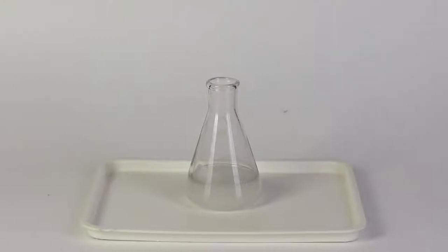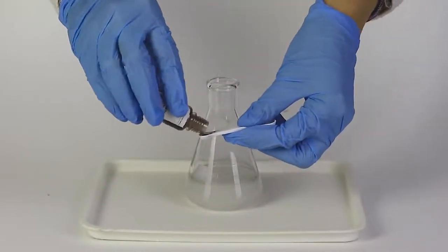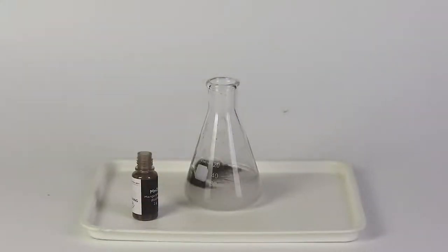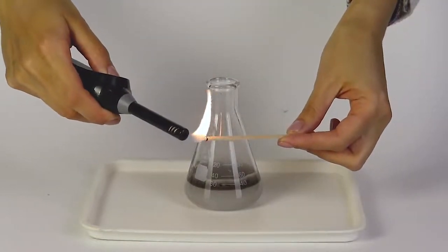Now remove the funnel and add one small measuring spoon of manganese dioxide to it. As soon as the manganese dioxide is added, the hydrogen peroxide starts to actively decompose into water and oxygen. This makes the reaction mixture bubble. The manganese dioxide acts as a catalyst for the decomposition of hydrogen peroxide.